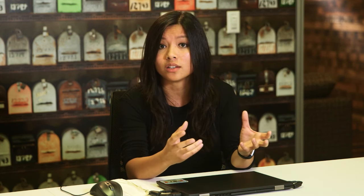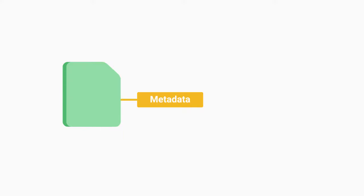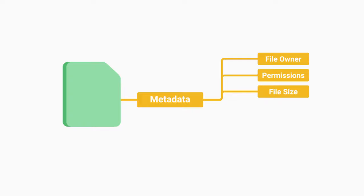Another important part of file management is the storage of actual file data. We write data to our hard drive in the form of data blocks. When we save something to our hard disks, it doesn't always sit in one piece — it can be broken down into many pieces and written to different parts of the disk. Block storage improves faster handling of data because the data isn't stored in one long piece and can be accessed quicker. It's also better for utilizing storage space. We also need to keep metadata that contains information about our file — like who created it, when it was last modified, and who has access to it.